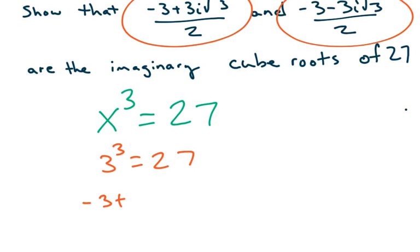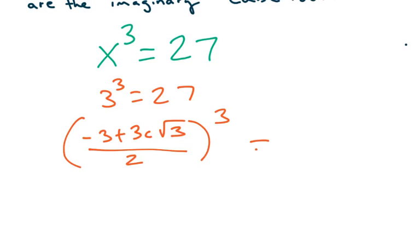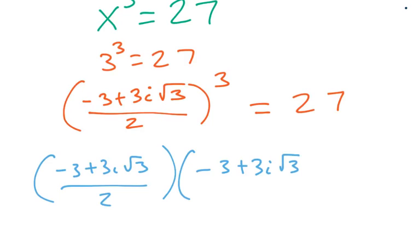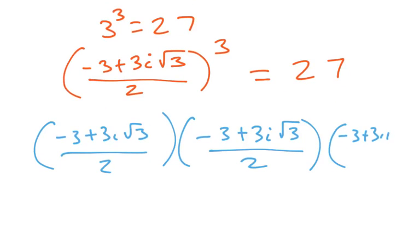So we're saying $\frac{-3+3i\sqrt{3}}{2}$. When I cube this, it will give me 27. So let's see if this is true. So let's do the difficult task of cubing this. What does cubing mean? Well, cubing means we're going to rewrite this as $\frac{-3+3i\sqrt{3}}{2}$ times $\frac{-3+3i\sqrt{3}}{2}$ times $\frac{-3+3i\sqrt{3}}{2}$. Let's just keep cleaning this up.